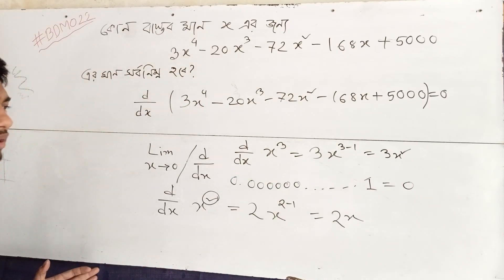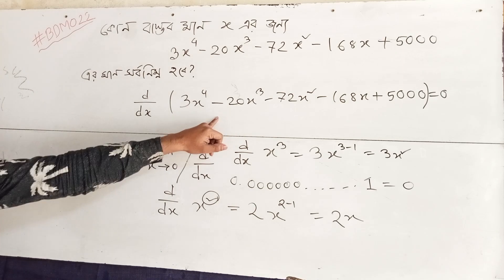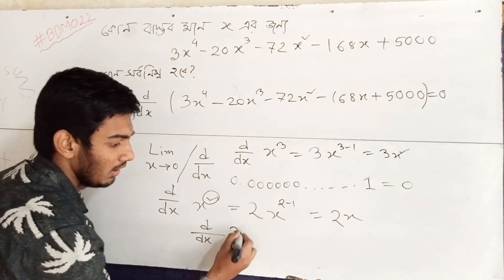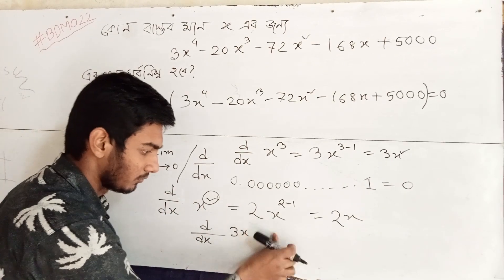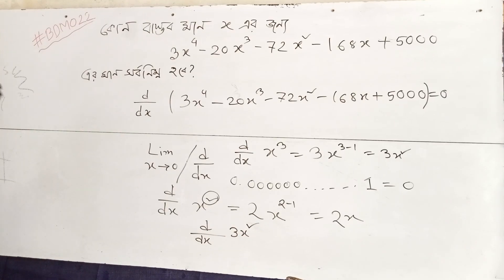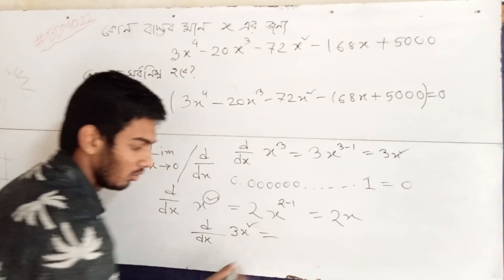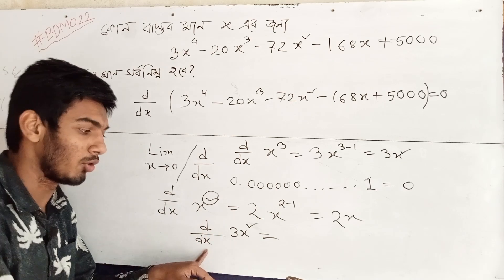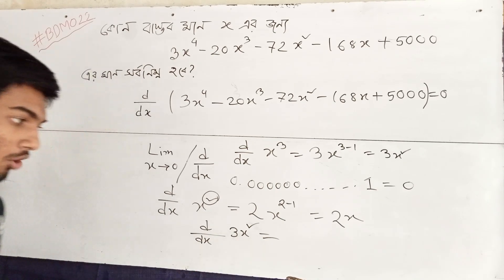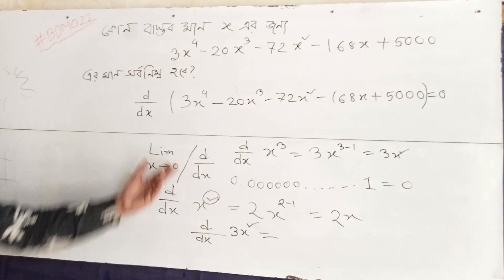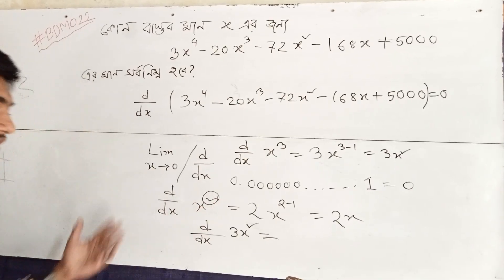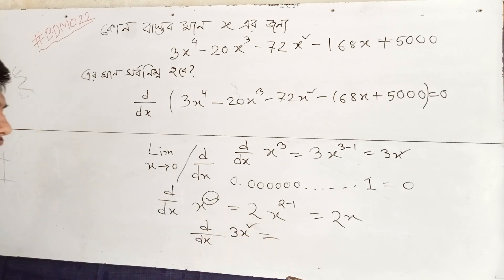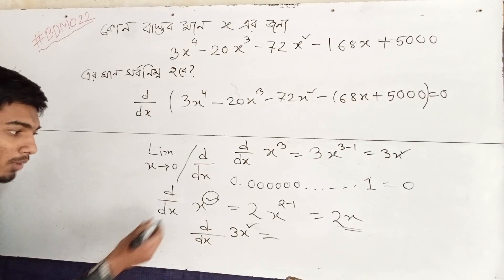So if we do x³, then we start with 3x². The differentiation of x³ gives 3x². And for x², the differential gives 2x. So we call 2x by the same rule.